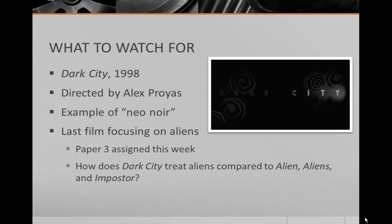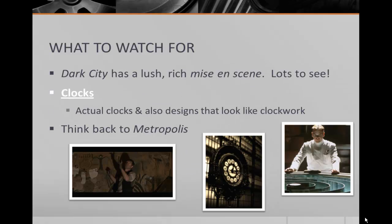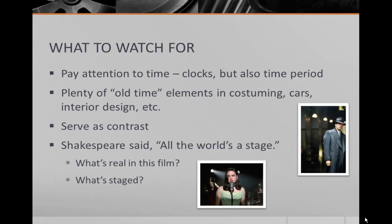The plot of Dark City can be a little hard to follow because it deals with memory and manipulation of memory. Please make sure you watch it twice — it'll really help. The first time you'll probably just be trying to figure out who's who and what's going on. I picked Dark City for this chapter because it has such a lush mise-en-scène. There's a lot to see, and I'd suggest a couple of things to watch for. First, look for clocks — actual clocks and designs that look like clockwork. You'll see a lot of swirls like fingerprints or the inner workings of clocks. Think all the way back to Metropolis and you'll know what I mean. So look for clocks.